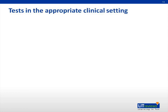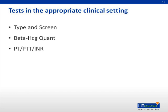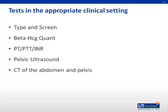In the appropriate clinical setting, do a type and screen. If the patient is pregnant or there's serious consideration that they may be pregnant, get a beta-HCG. Check coagulation studies if indicated. If you find something concerning on examination, you may need a pelvic ultrasound or CT of the abdomen and pelvis. In a young female, there's always caution about CT scans, so think about whether an ultrasound for the appendix may be more appropriate.